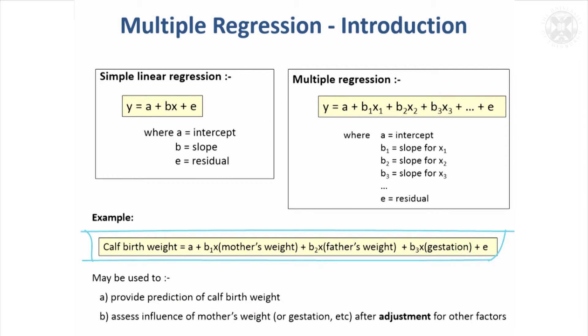Another thing multiple regression is useful for is: what's the effect of mother's weight on calf birth weight after taking into account the father's weight and the gestation at which the calf is born? So it has this other role of adjusting your analysis for other potentially confounding factors, but we'll look at that next time.